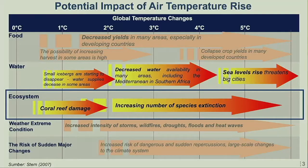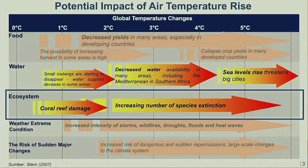Land subsidence is a real threat to the existence of big cities in coastal regions as a result of rising global temperatures. If temperatures increase 1 to 1.5 degrees Celsius, cities in the coastal area will be threatened by land subsidence — for example, Jakarta, Semarang, and Surabaya, Indonesia, by 2050.